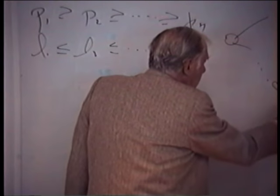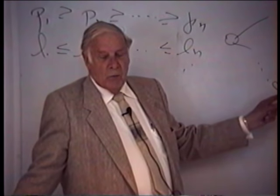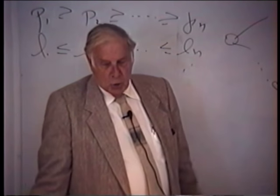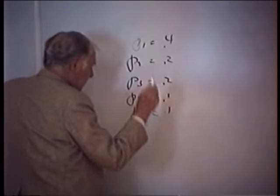Now, I'll do the case that he did in his paper. p1 is 4 tenths, p2 equals 2 tenths, p3 equals 2 tenths, p4 equals 1 tenth, and p5 equals 1 tenth. He says, take these two and combine them, and you will have four tenths, two tenths, two tenths, and two tenths. I'm going to combine them as a single symbol. What I'm doing is combining these two symbols into one symbol here and putting it here.